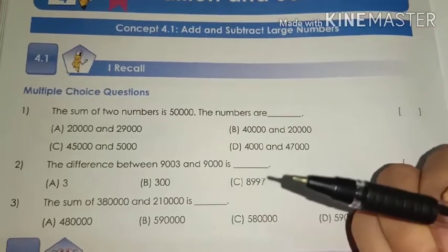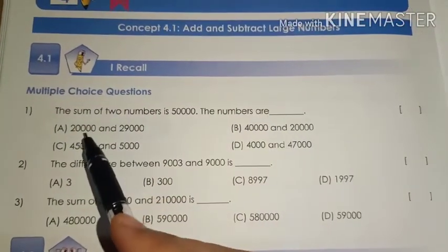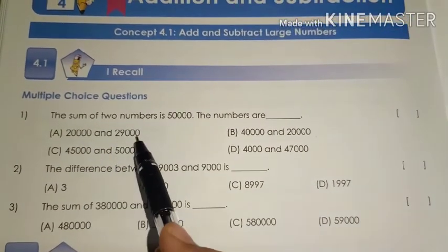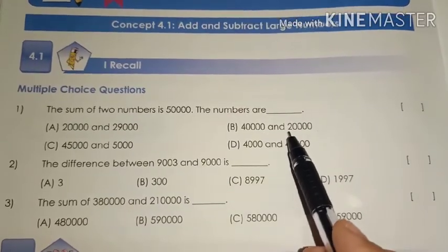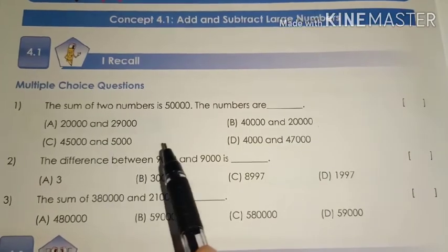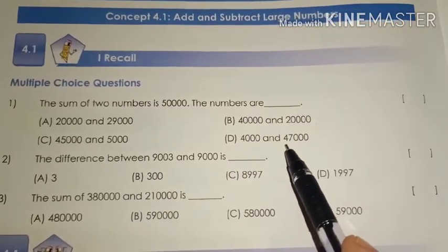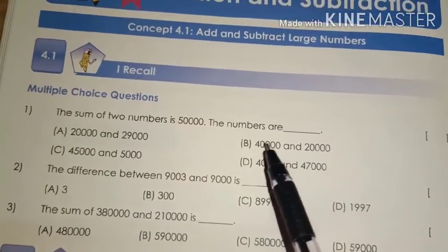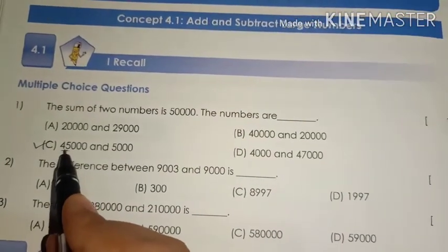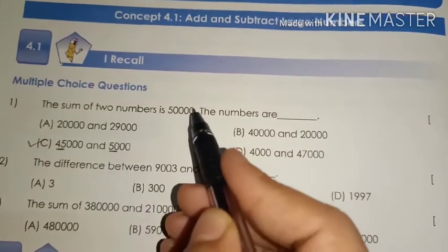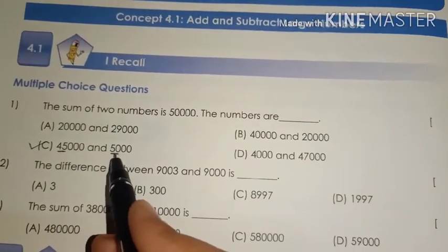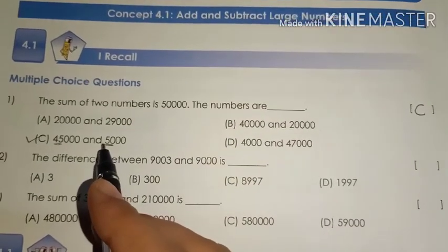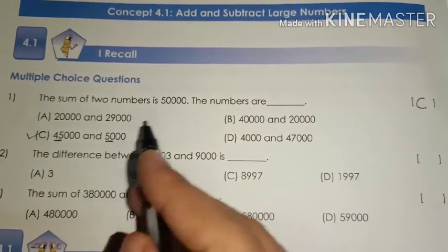Let us recall the concept with a few more examples from your workbook. Look at the 'I Recall' part — multiple choice questions. First one: the sum of two numbers is 50,000. Option A: 20,000 and 29,000. Option B: 40,000 and 20,000. Option C: 45,000 and 5,000. Option D: 4,000 and 47,000. The answer is Option C — 45,000 plus 5,000 equals 50,000. You can also solve it vertically in your rough book to check the answer.